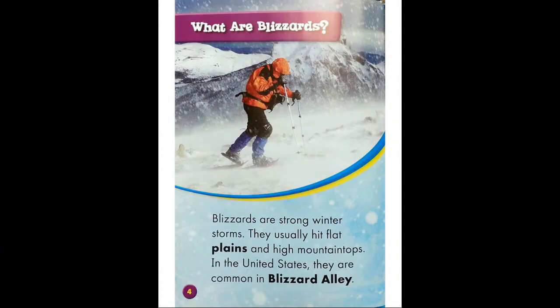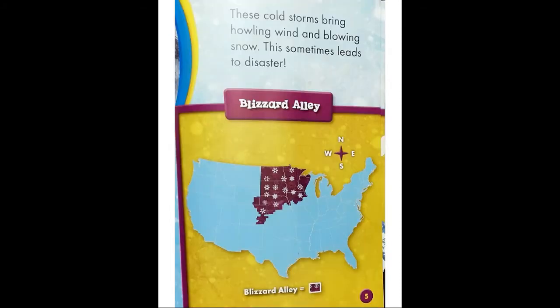What are blizzards? Blizzards are strong winter storms. They usually hit flat plains and high mountaintops. In the United States, they are common in Blizzard Alley. These storms bring howling wind and blowing snow. This sometimes leads to disaster.